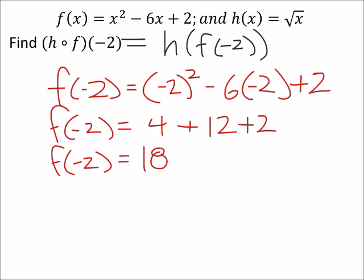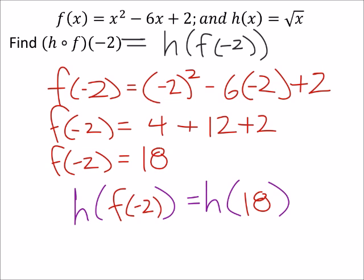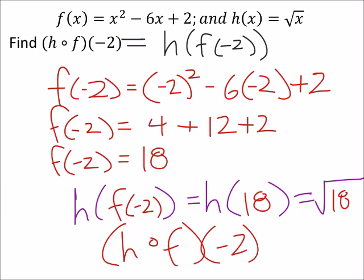Now, what we want, though, is h of f of negative 2, which really is just h of f of negative 2 is 18. And h of x is the square root of x. So I've really got the square root of 18. And so, I guess, to write this finally, we have h of f of negative 2 equals the square root of 18 can be split up, right? We've got a perfect square amongst its factors. So it's the square root of 9 times the square root of 2. So it's really 3 times the square root of 2.